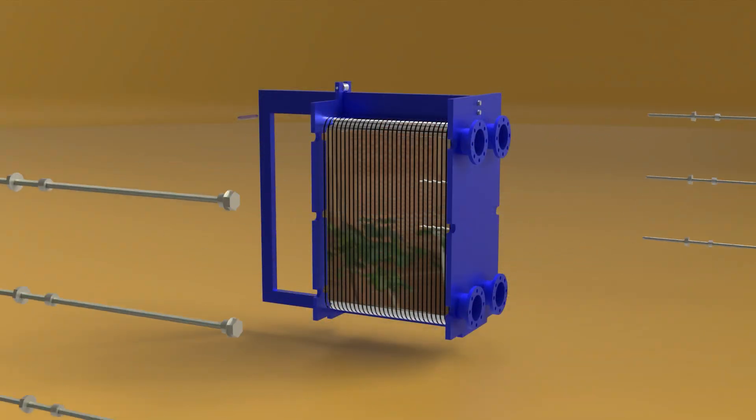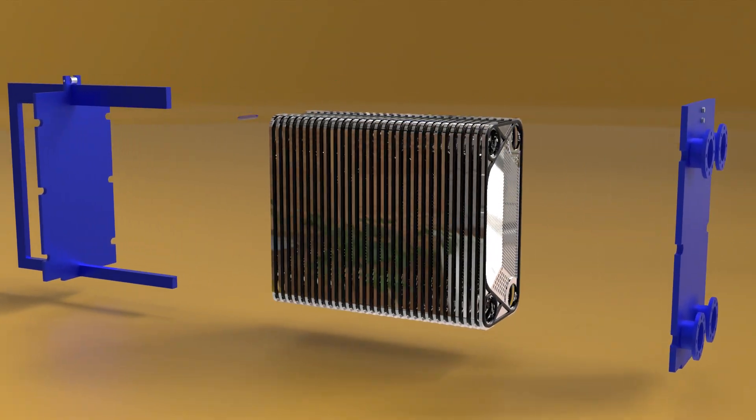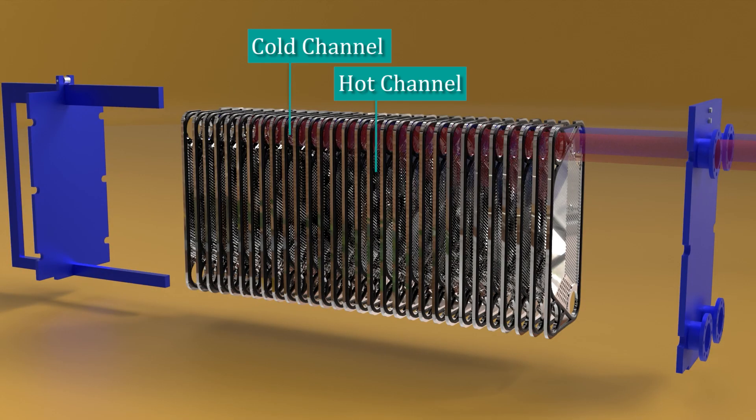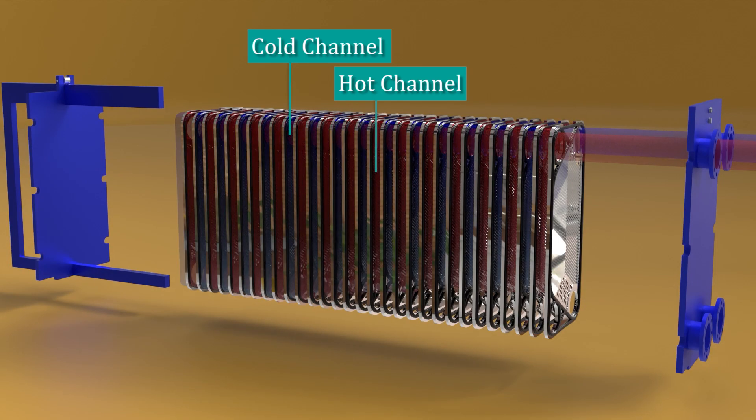In a PHE, this is done using thin metal plates stacked together. One liquid flows on one side of each plate and the other liquid flows on the opposite side.